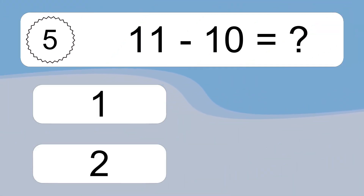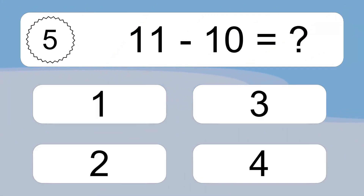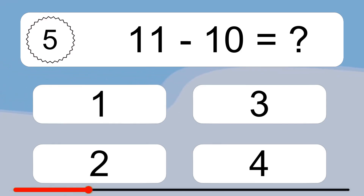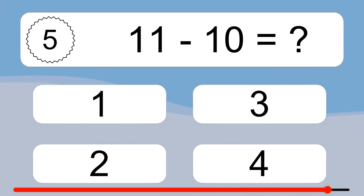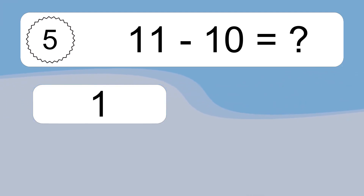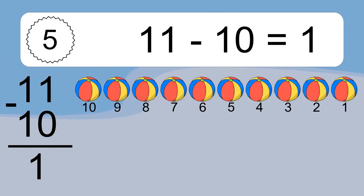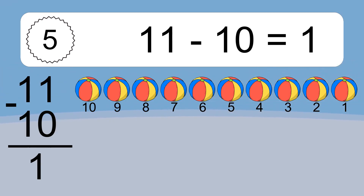11 minus 10 equals what? 11 minus 10 equals 1. Let's count it: 10, 9, 8, 7, 6, 5, 4, 3, 2, 1.